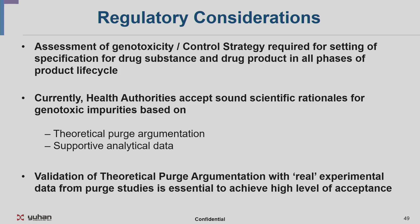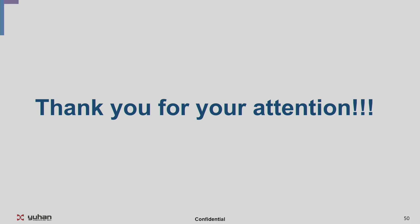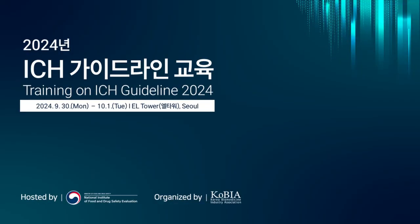Regarding regulatory considerations related to purging: ICH M7 talks about assessment of genotoxicity and control strategy required for setting specifications for drug substance and drug product in all phases of the product lifecycle. Currently, health authorities accept a sound scientific rationale for genotoxic impurities based on theoretical purge argumentation and supportive analytical data. Validation of a theoretical purge argumentation with real experimental data from the purge study is essential to achieve a high level of acceptance. I would like to end my presentation — a summary of ICH M7 as well as our actual risk assessment with nitrosamines. Thank you for your attention.